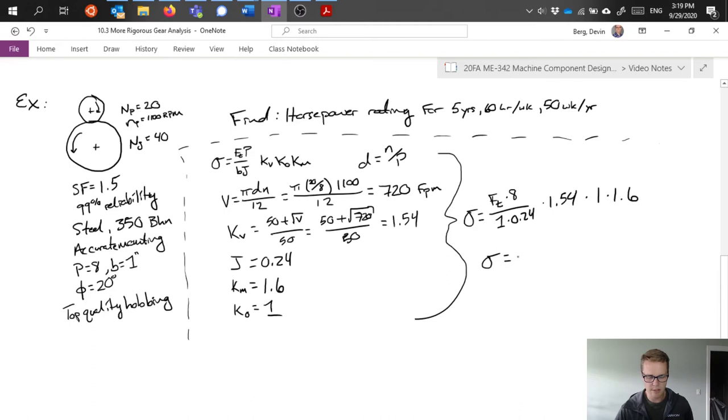This gives us that the stress in our part is 82.1 times the tangential force. We're trying to find a horsepower rating. And this tells us the stress in terms of the force transmitted. Force transmitted is related to that horsepower that we're passing through our gear set.